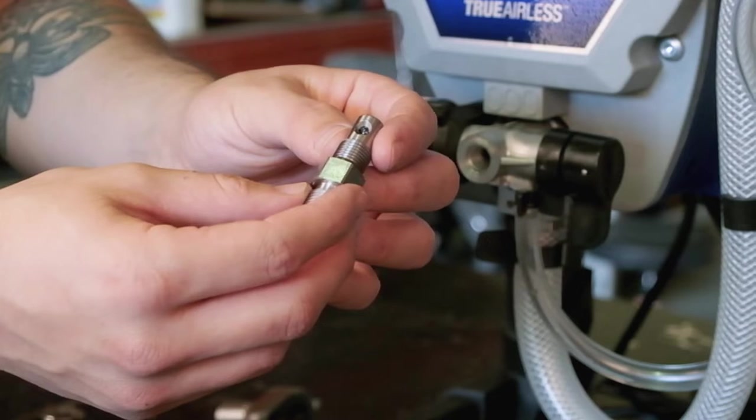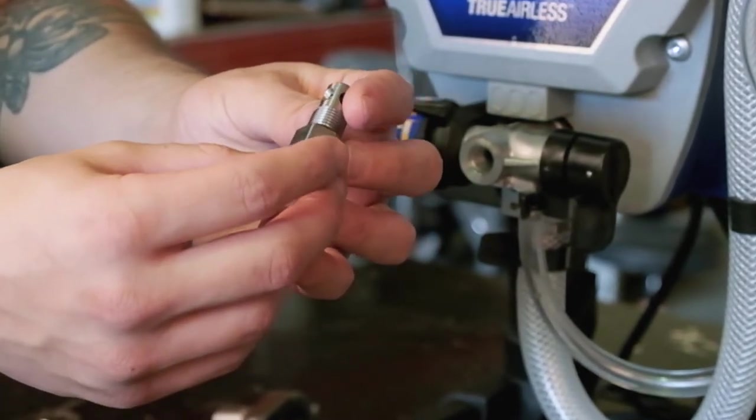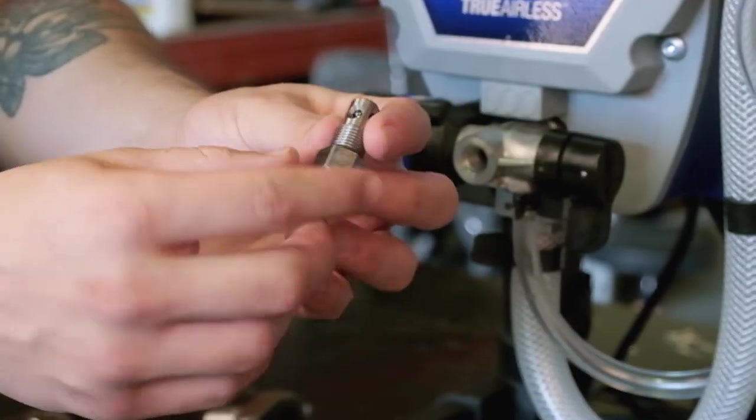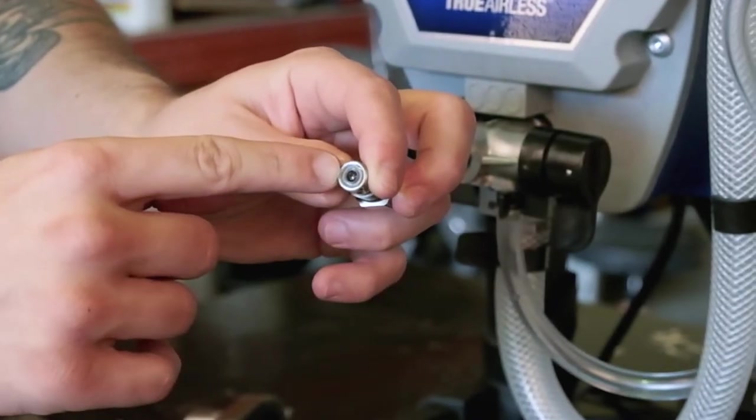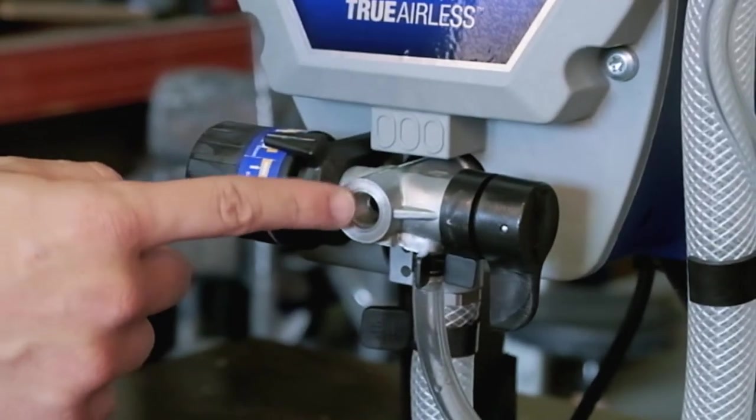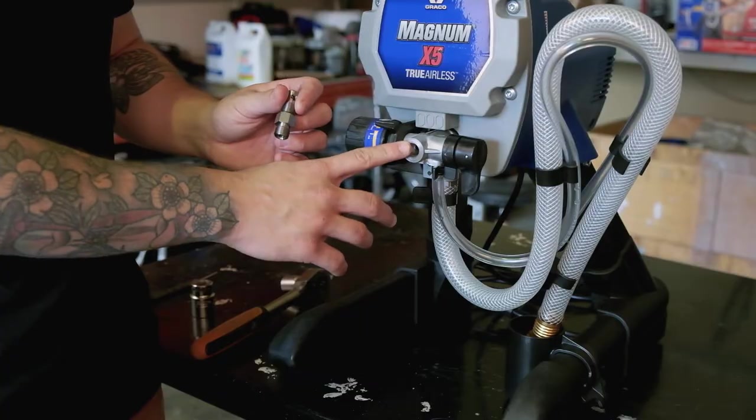So if you've got any blockages or anything like that, that can definitely stop the fluid from flowing through and you'll typically notice it either around these sections here or around this section here and sometimes in this section here. What we want to do is we just want to give this a good clean up and also in there.